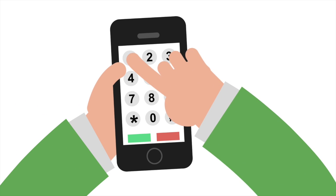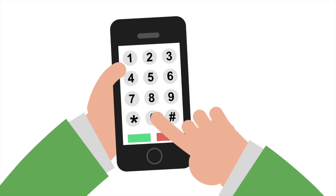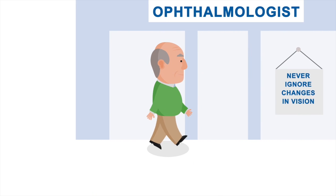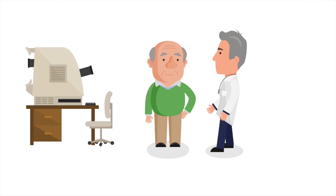Contact your optometrist or your ophthalmologist immediately if you have any changes in your vision, especially distortion, dark patches, or empty spaces.